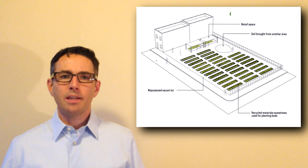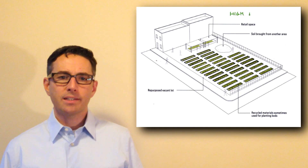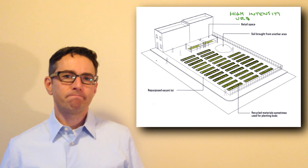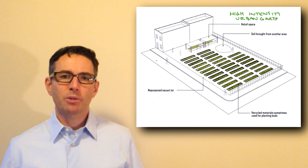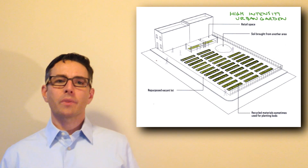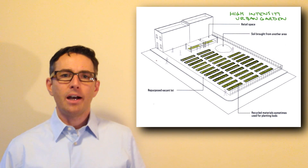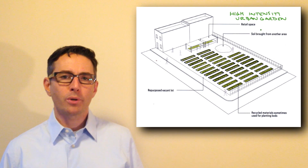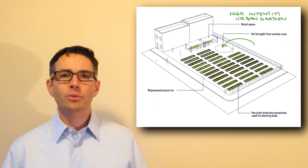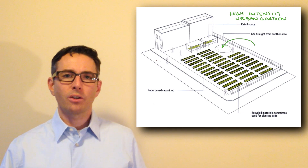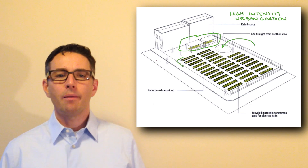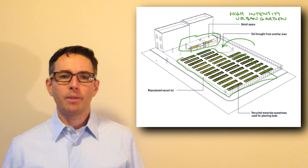The next version would be a high-intensity urban garden, which supports high expertise and is larger than lot gardening. This would be an environment that uses support from outside the urban environment — for example, bringing in organic material and soil from farther away — and features more extensive retail space and more area for growing in general.